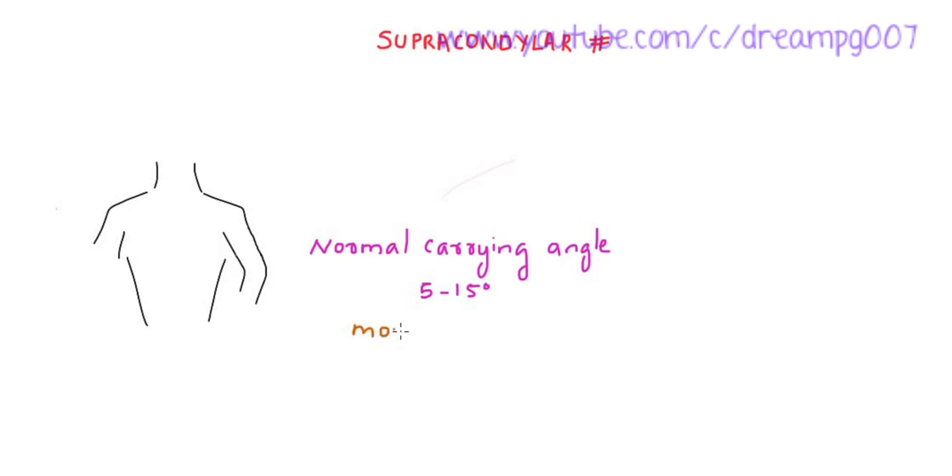This carrying angle is more in females. When this carrying angle is greater than the normal carrying angle, it leads to a deformity called valgus deformity. So malunion in supracondylar fracture leads to cubitus valgus or gunstock deformity.